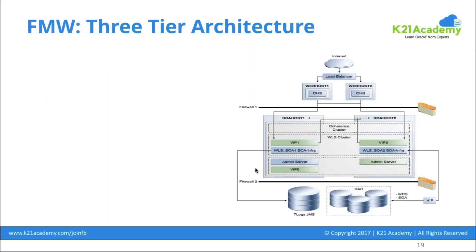For high availability, at the database layer you use something called RAC — Real Application Cluster. You have two machines running the database in active-active mode, both talking to the same single repository. Even if you're not a DBA, it's good to have familiarity with this concept.